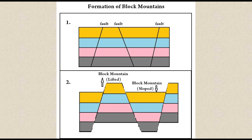In the next picture, show the upward and downward movements of the blocks using different colors or shades for the same layers, so it is clear what has happened to the rock. You can see two blocks standing and two blocks that have gone down. Examples of block mountains have already been discussed. There are two types of block mountains: one is a lifted block mountain and the other is a sloped block mountain.